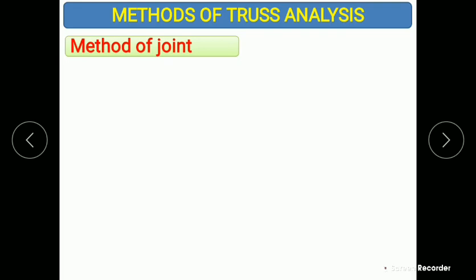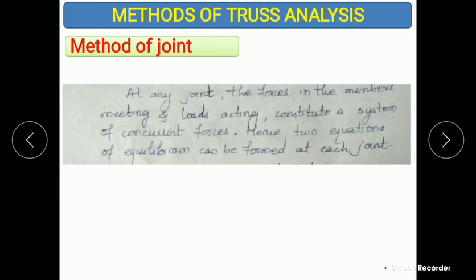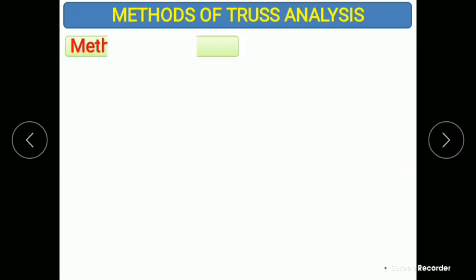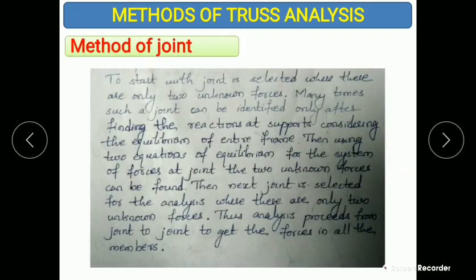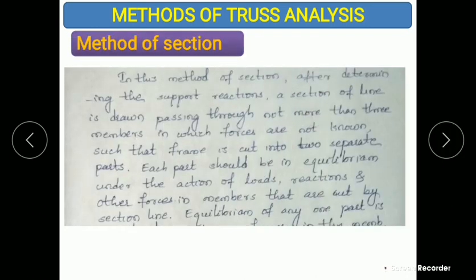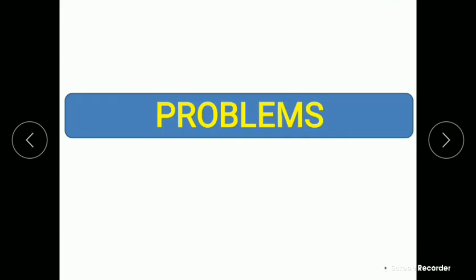In the method of joints, at any joint the forces in members meeting and the loads acting constitute a system of concurrent forces. Hence, two equations of equilibrium can be formed at each joint. While solving problems, I will explain in detail how to use this method with actual examples.